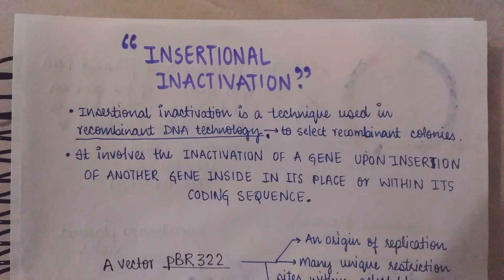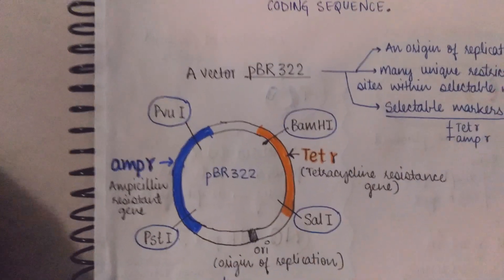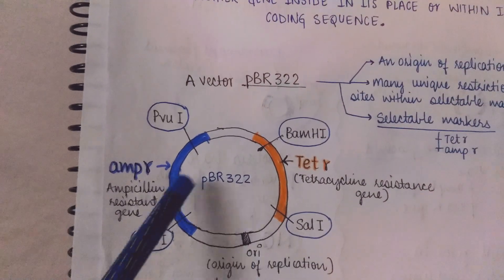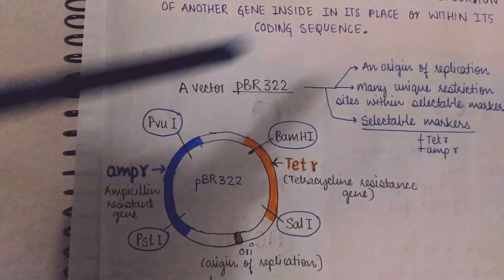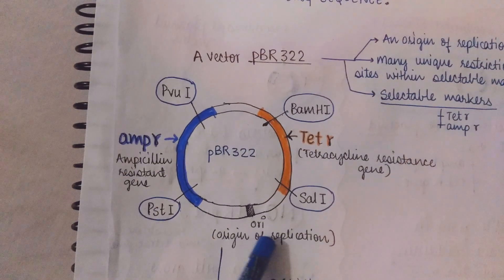Let us understand this definition with an example. This is a plasmid vector PBR322. It mainly consists of three parts. First is origin of replication.